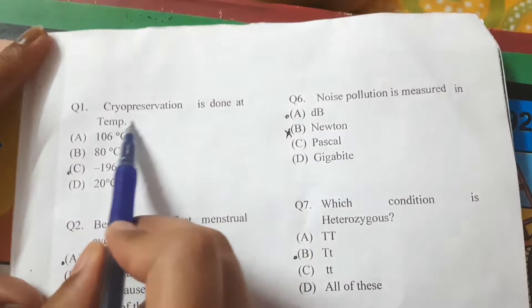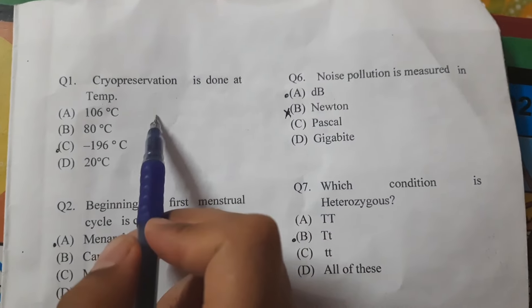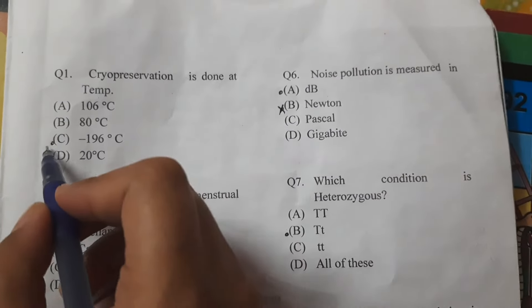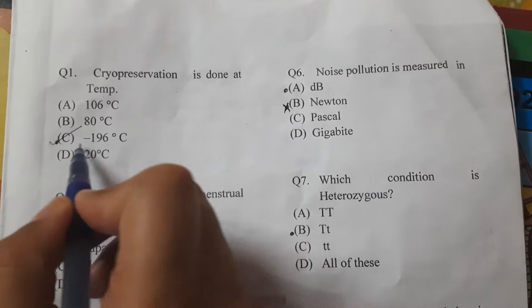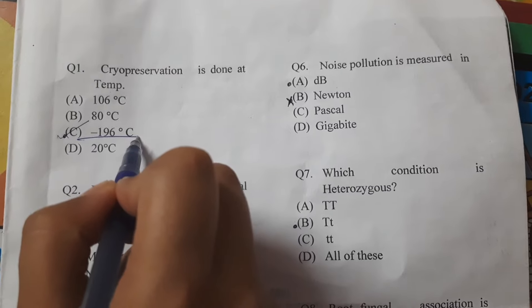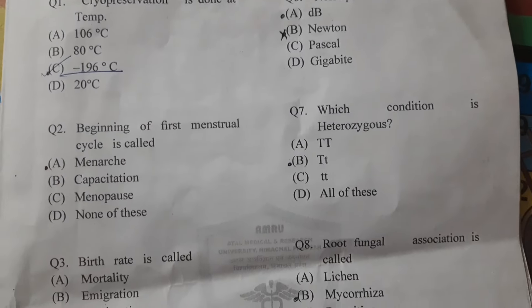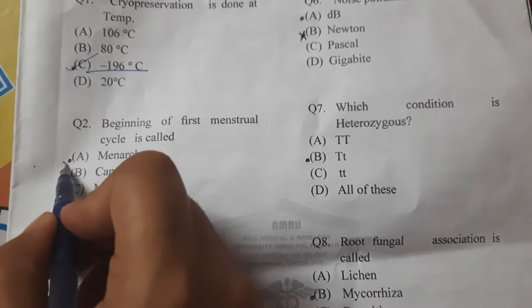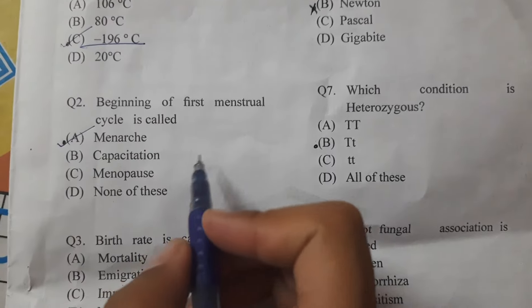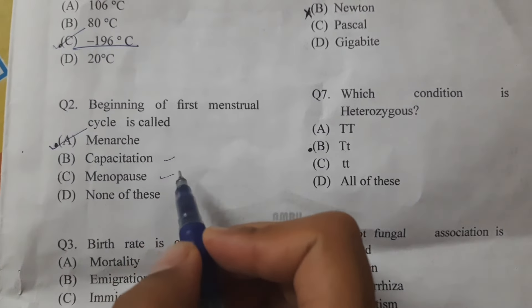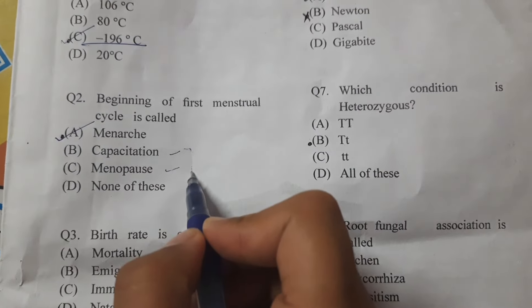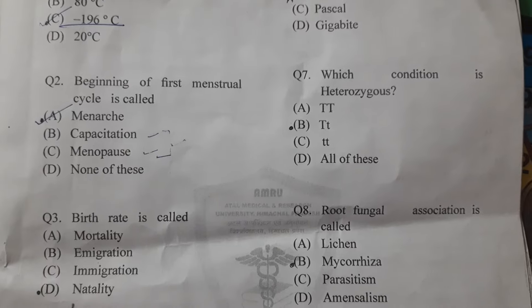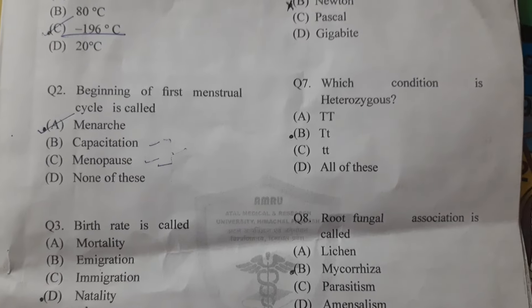Our first question: cryopreservation is done at what temperature? The answer is option C, that is -196 degrees Celsius. Second: the beginning of the first menstrual cycle is called menarche. Other terms to know are capacitation, menopause, and hormonal influence.